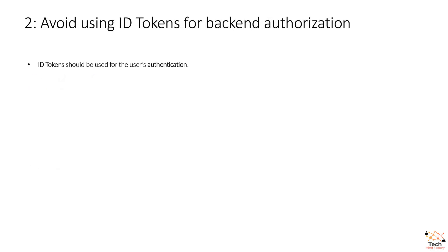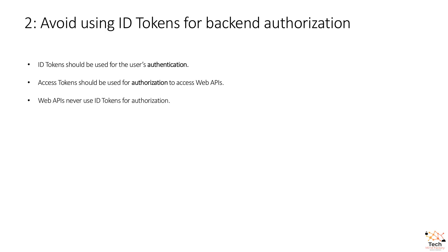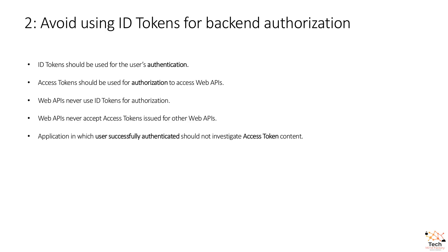The second recommendation is to avoid using ID tokens for back-end authorization. ID tokens should be used for user authentication. Access tokens should be used for authorization to access web APIs. Web APIs never use ID tokens for authorization, and web APIs never accept access tokens issued for other web APIs. An application in which a user successfully authenticated should not investigate the access token content.